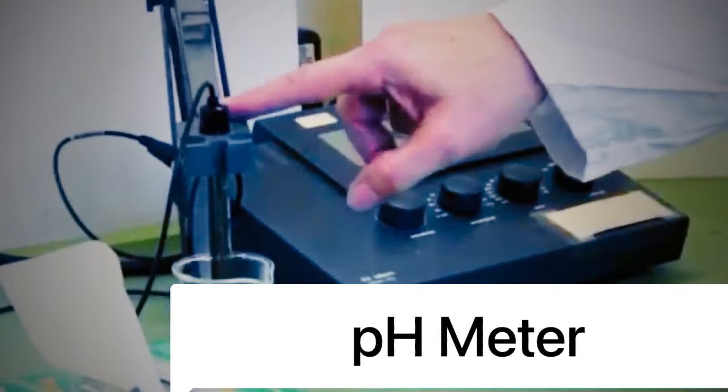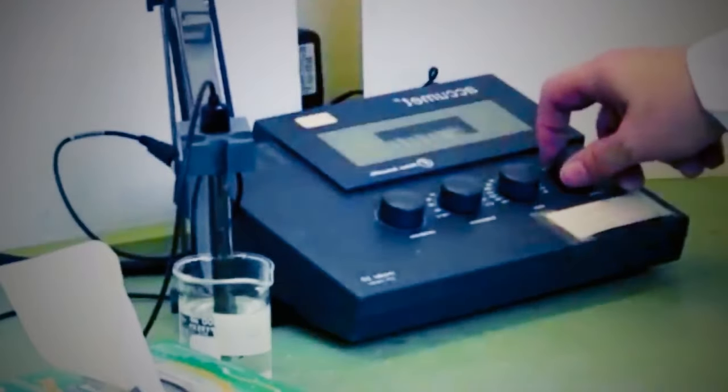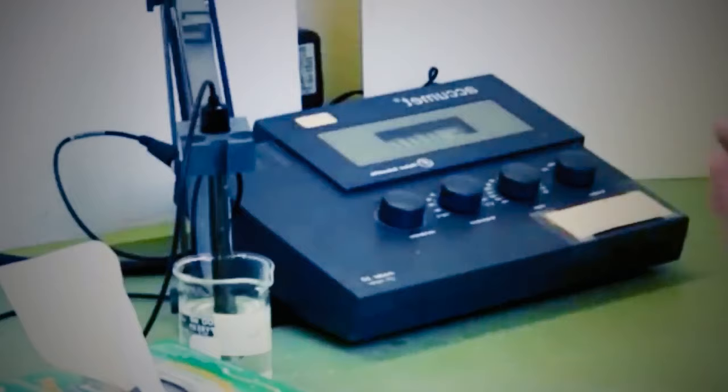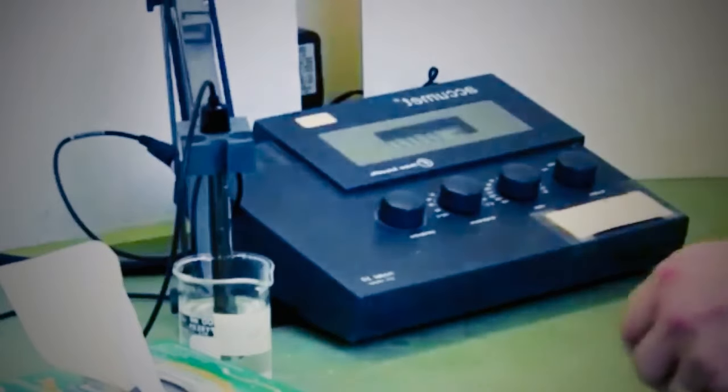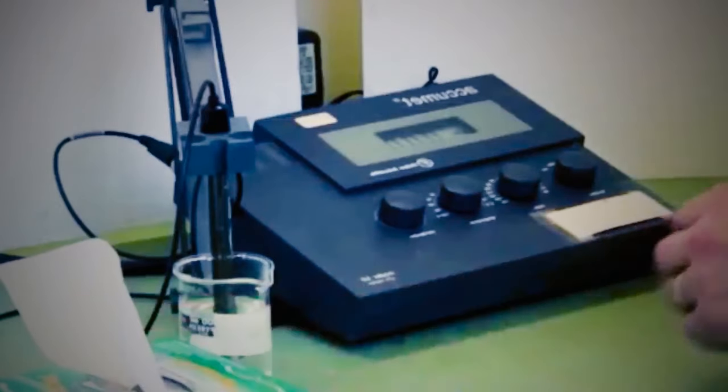pH meter. A simple and speedy device to measure the acidity and alkalinity of a fluid. A pH meter acts as a voltmeter that measures the electrical potential difference between a pH electrode and a reference electrode, and displays the result in terms of the pH value of the solution in which they are immersed.